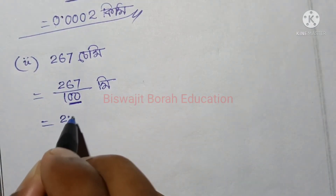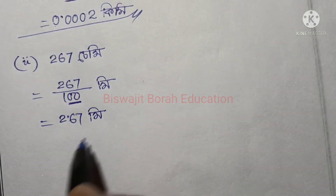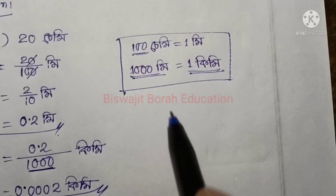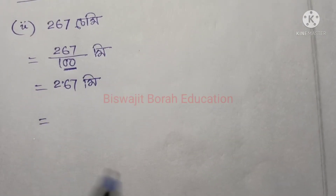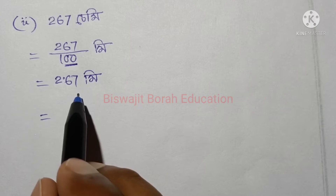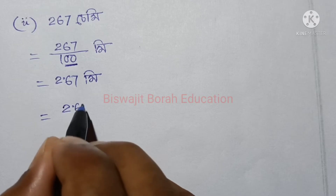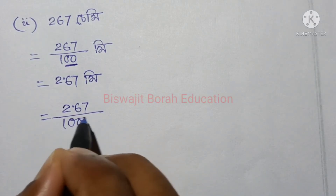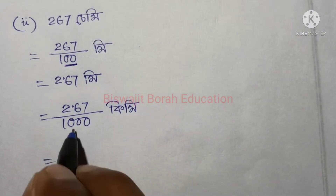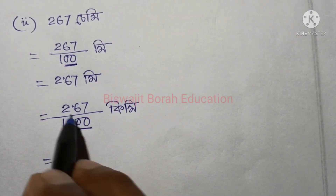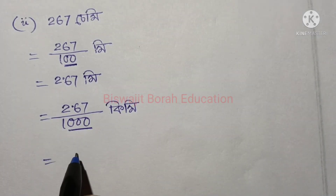2.67 meters is 2 meters. So if we do this, we can convert 2.67 to km — that is 1,000 km or 1,100 km. So we will see this 267, which is 3.2.